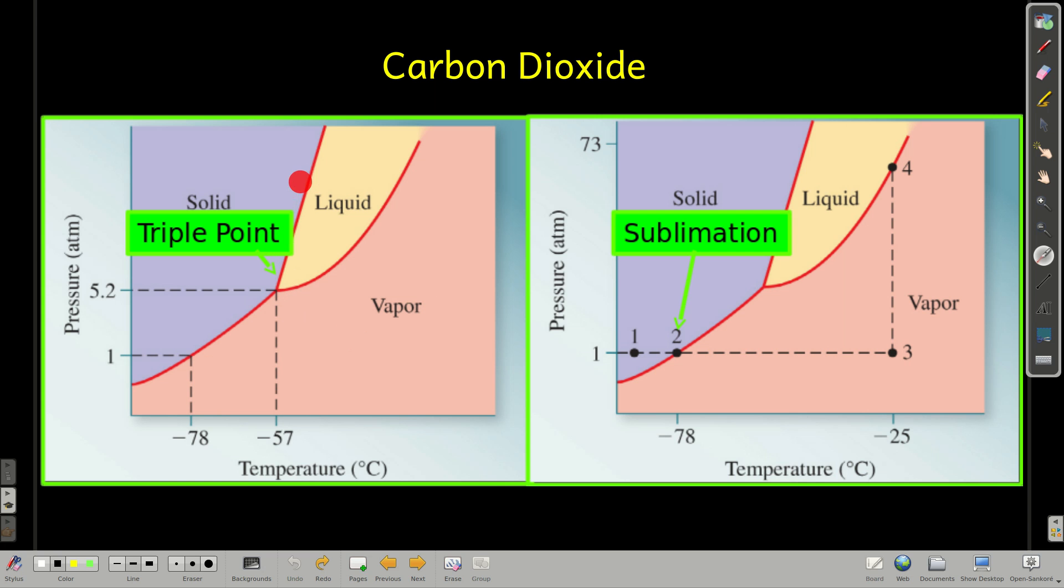Along any of these lines, there's an equilibrium between the phases that touch that line. So anywhere along this line, there's an equilibrium between solid and liquid. So to go from here to here, you would have to melt.